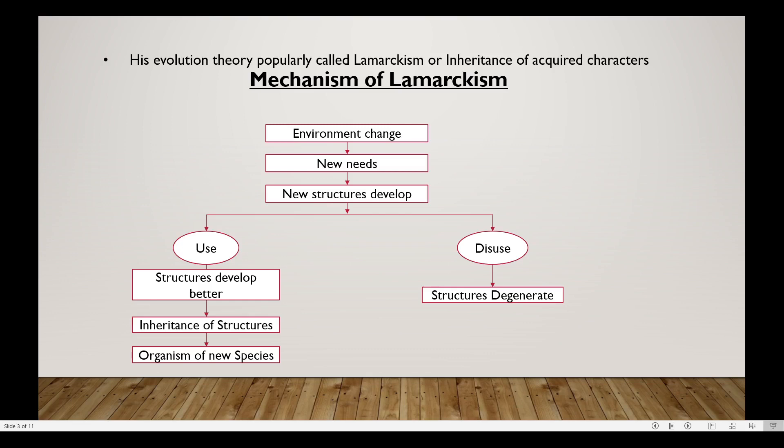Environmental changes lead to new needs for organisms. These new needs lead to new structure development in organisms. With continued use, these new structures develop better. This leads to inheritance of structures, which are also passed on to other species, eventually leading to the origin of new species.